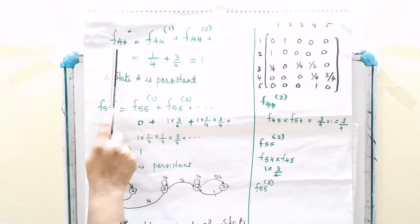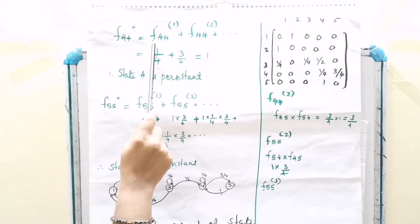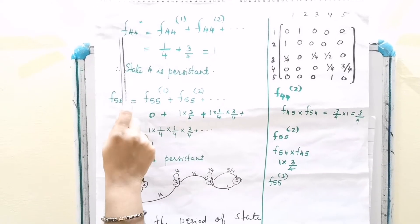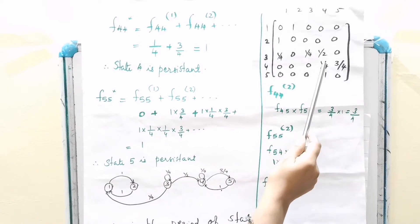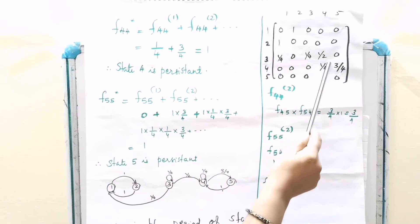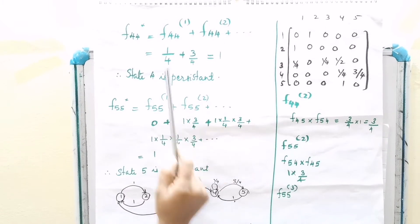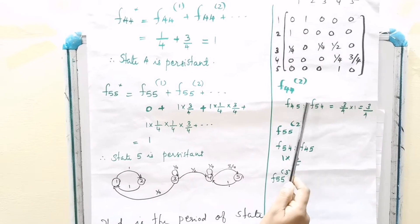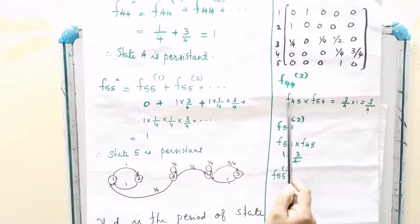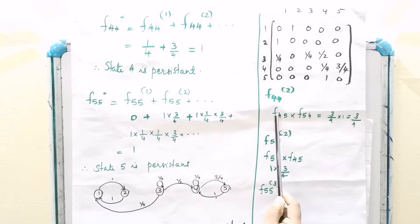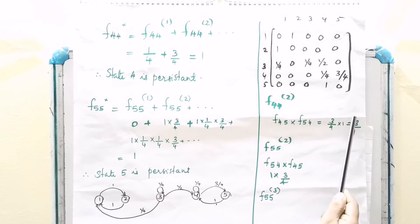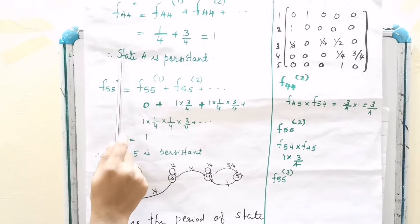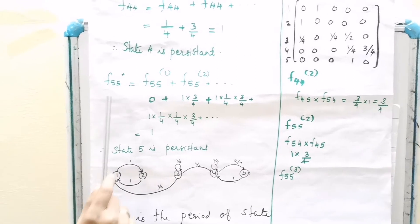Consider state 4. F44* equals F441 plus F442 plus etc. F441 is possible, that is 1/4. F442: F45 possible into F54 — that is 4 to 5 and 5 to 4 — that is 3/4. So 1/4 plus 3/4 equals 1. Therefore state 4 is persistent.